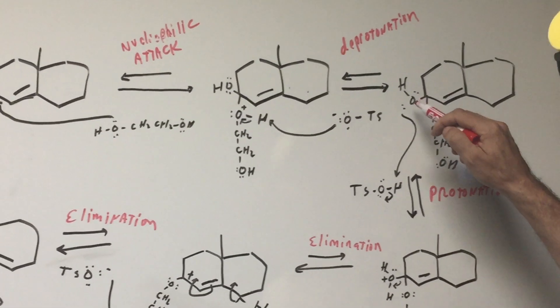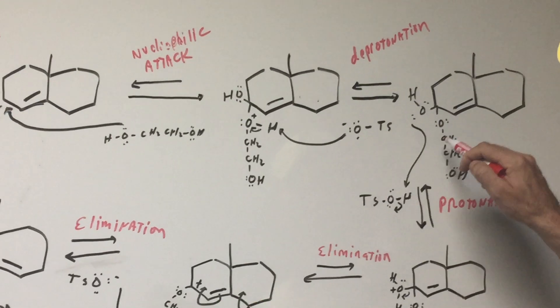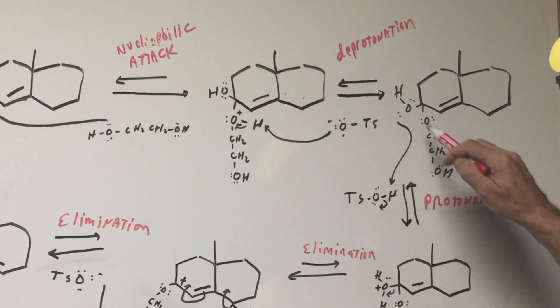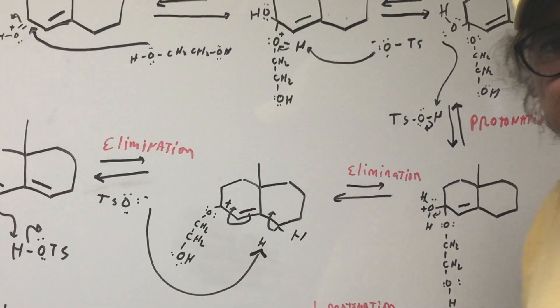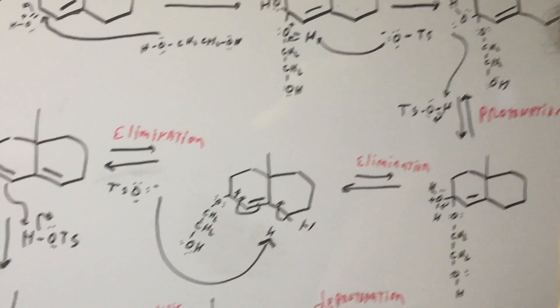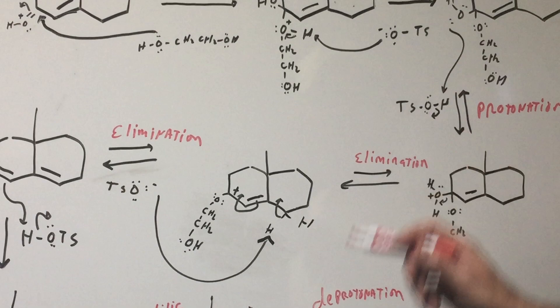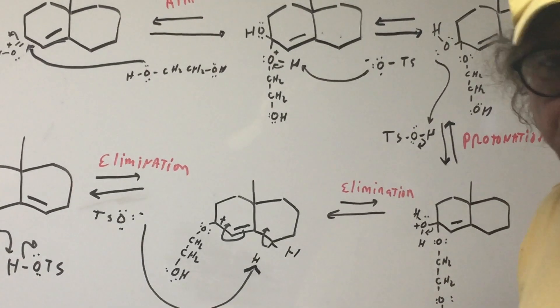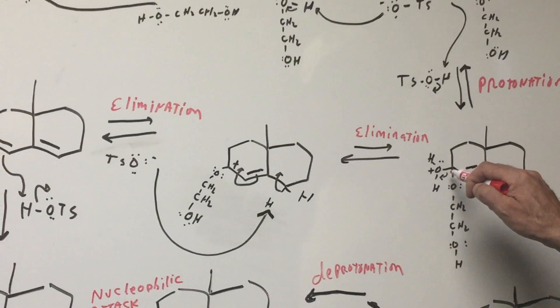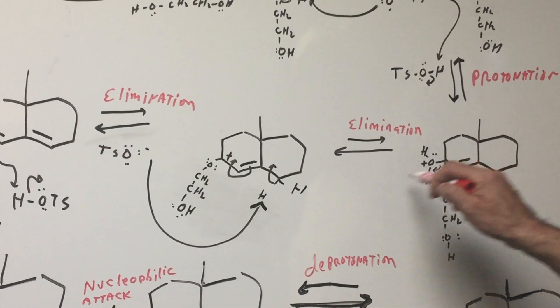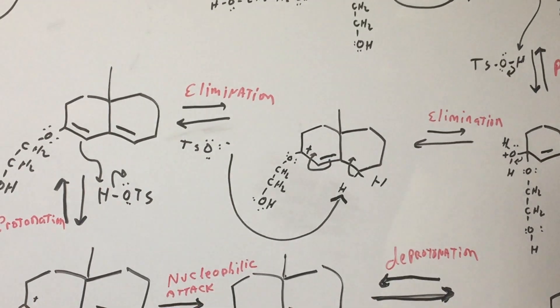Next step, I'm going to protonate the OH group and I'm going to be getting ready to set up a leaving group. So protonation gives me this. As you remembered, an OH is normally a poor leaving group in an acidic medium. So we got to make it into a good leaving group and I'm going to call that H2O. Now, as you can see, there's my elimination step. Water is eliminated and you form a carbocation.